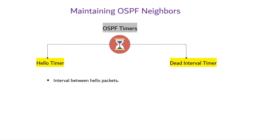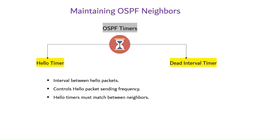The hello timer is the interval at which hello packets are sent to neighbors to maintain the relationship. It controls how often OSPF routers send hello packets to discover and maintain neighbor relationships. Routers on the same segment must have matching hello timers and parameters to become OSPF neighbors.